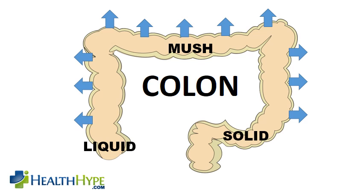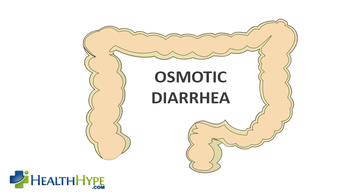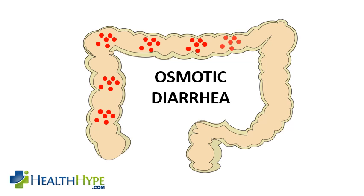However, in diarrhea this process is distorted. There are four mechanisms by which diarrhea may arise. The first is known as osmotic diarrhea. Undigested nutrients can block the reabsorption of water and can even draw out water into the colon. Therefore there is too much water in the colon and stool remains watery.